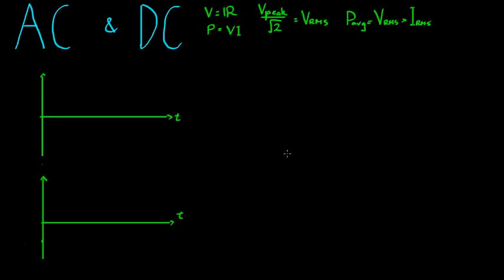In direct current you only get either positive or negative voltages, you don't get them together.